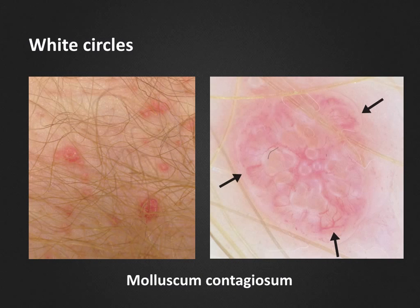Although very specific, white circles around yellowish structureless areas can also be seen in Molluscum contagiosum, as shown here. Of course, the differential diagnosis can be made easily thanks to the clinical image in most cases. Nevertheless, it can be of interest to point out another dermoscopic finding in Molluscum, which are the typical crown vessels, as pointed out by the arrows.